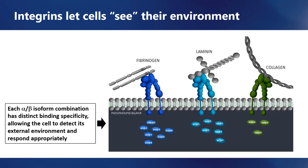Integrin receptors are formed by the dimerization of alpha and beta subunits. With 18 known alpha isoforms and 8 known beta isoforms, there are over 100 unique integrin pairs. Each alpha-beta dimer creates a specific binding pocket, providing integrins with tremendous versatility in what they will and will not bind to in the ECM. As shown in this illustration, one set of alpha-beta combinations will bind specifically to fibrinogen, whereas a different set will bind to laminins, and yet another set will bind to collagens. In this way, cells are able to 'see' where they are and act accordingly.